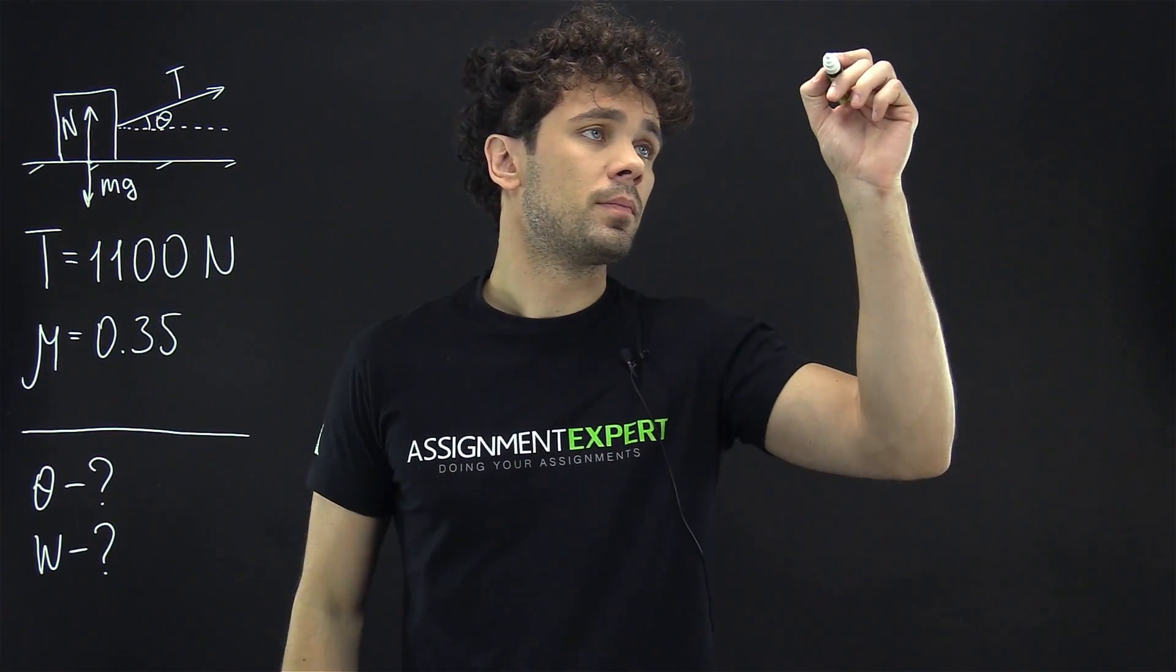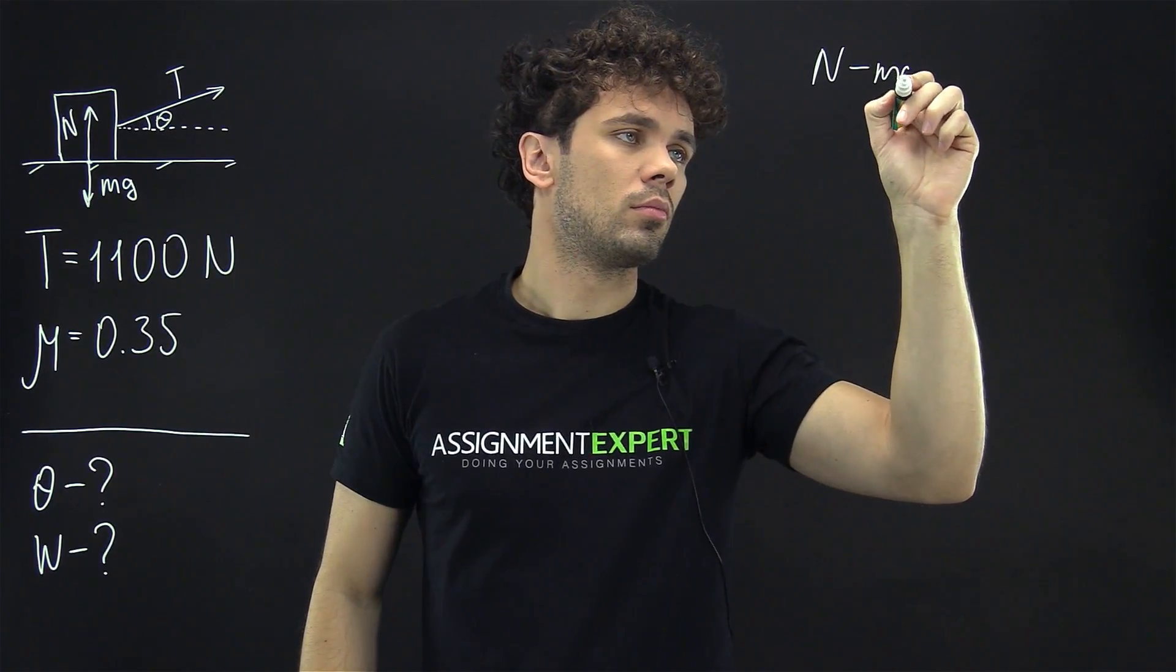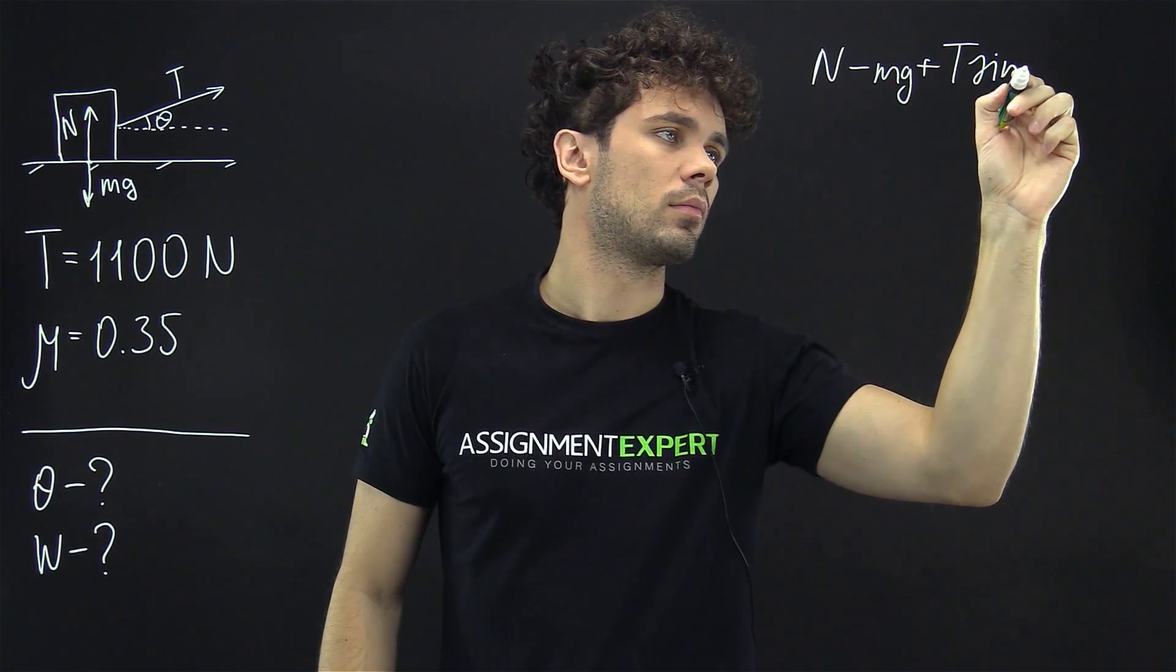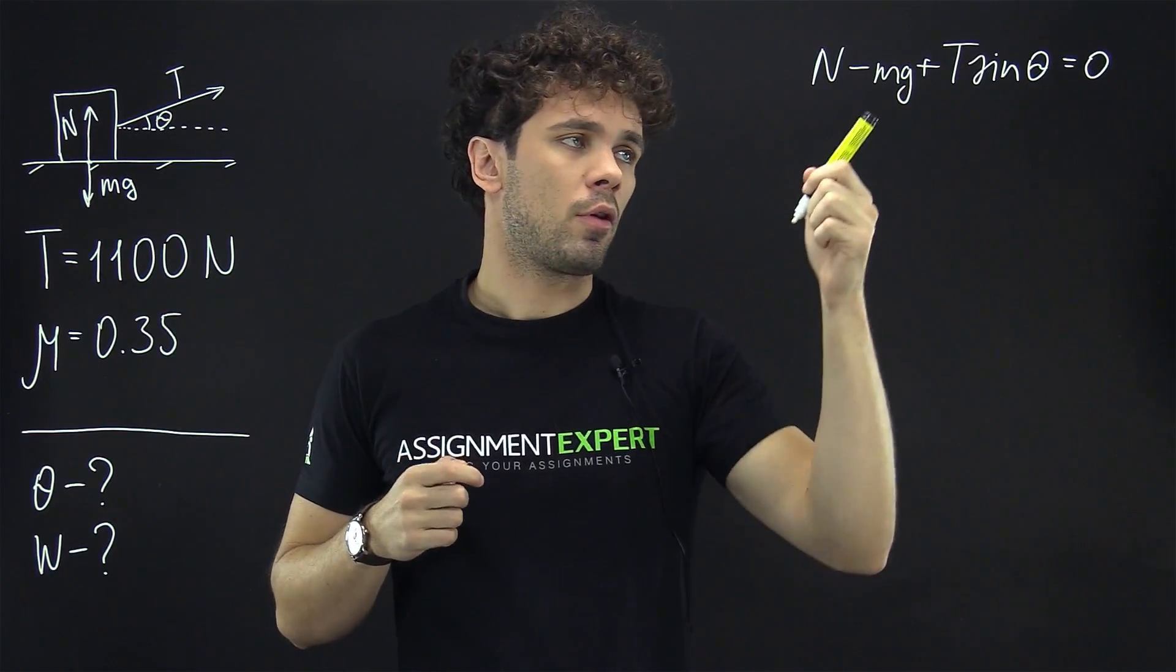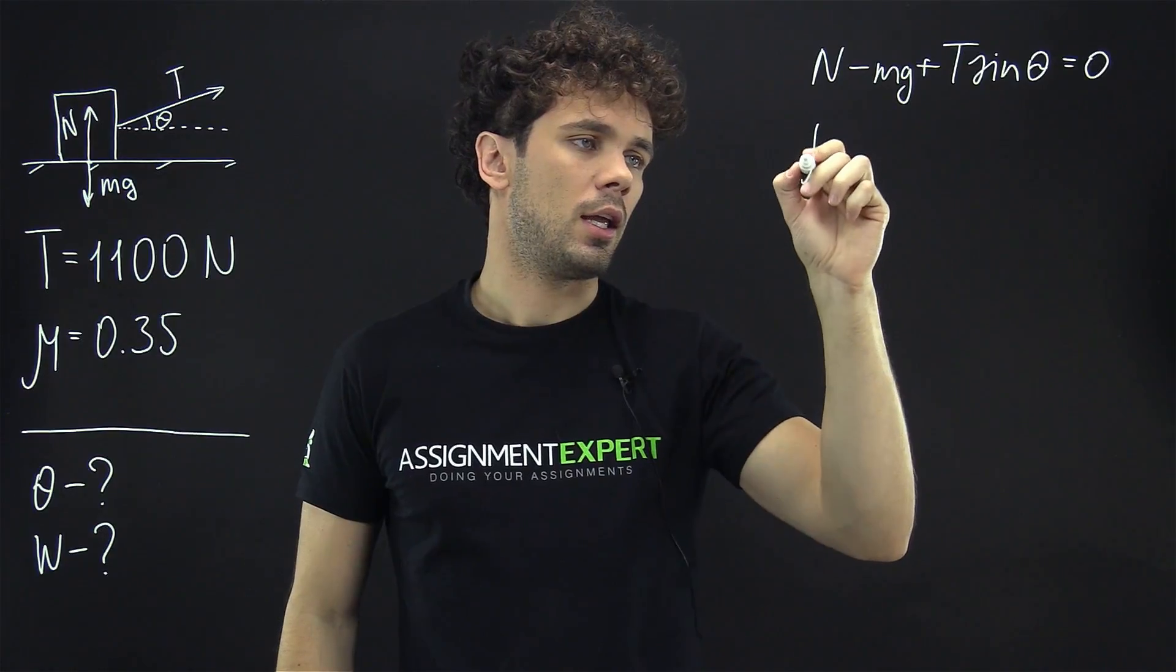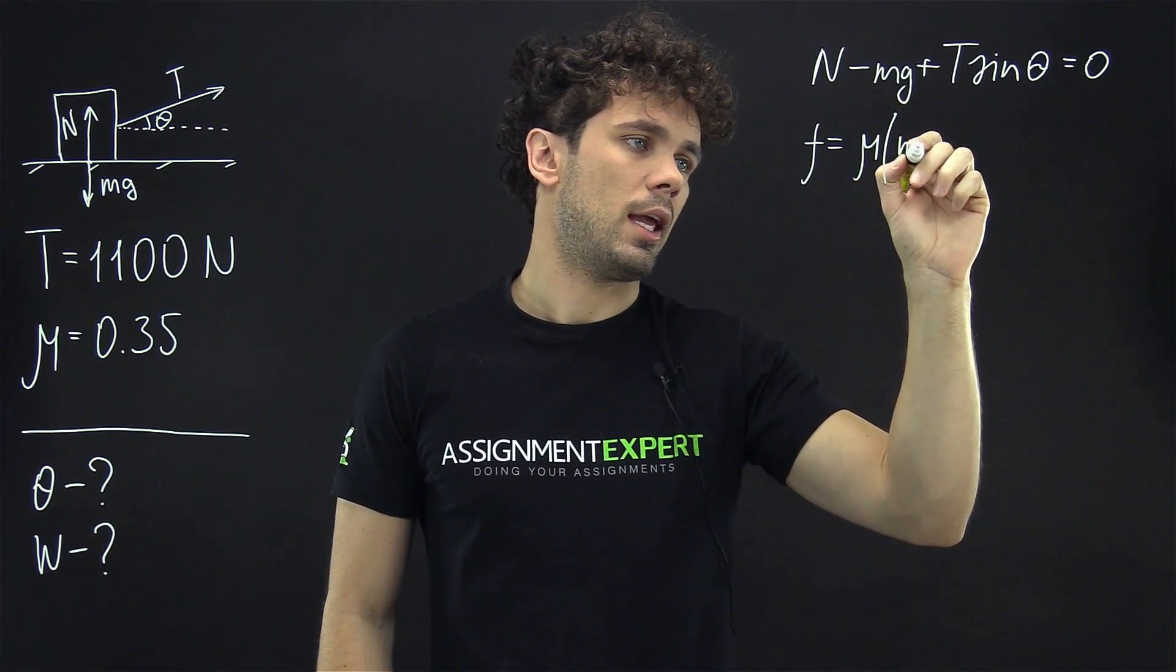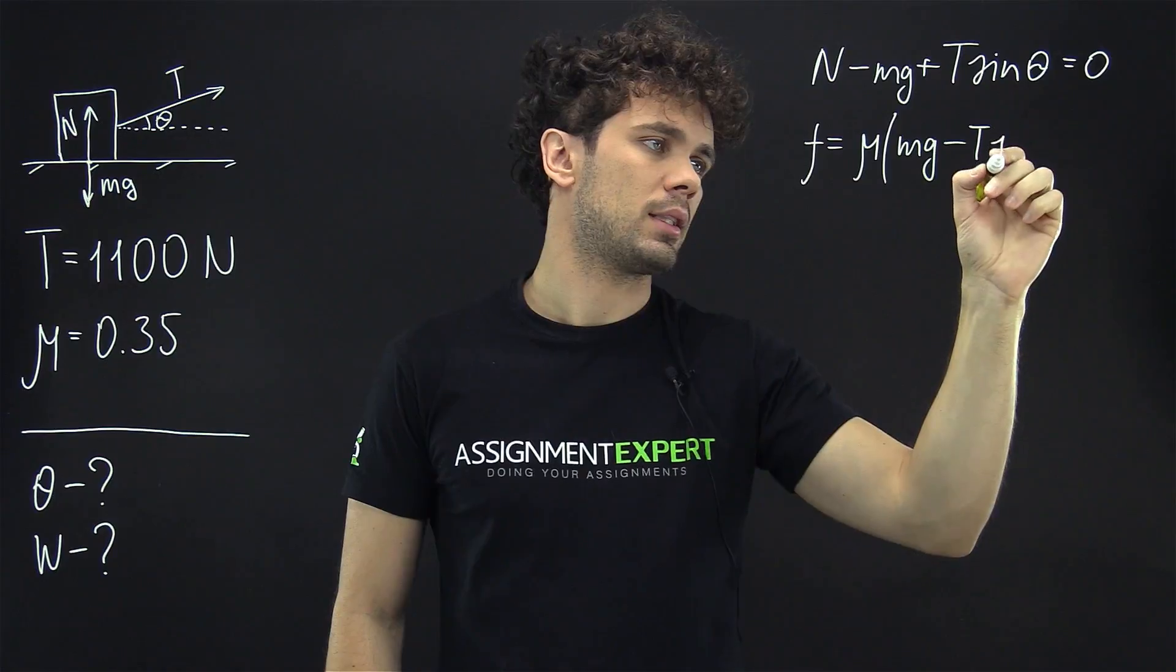So we have N minus mg plus T times sine theta equals zero. Now from this equation we can get the force of friction. F equals nu times mg minus T times sine theta.